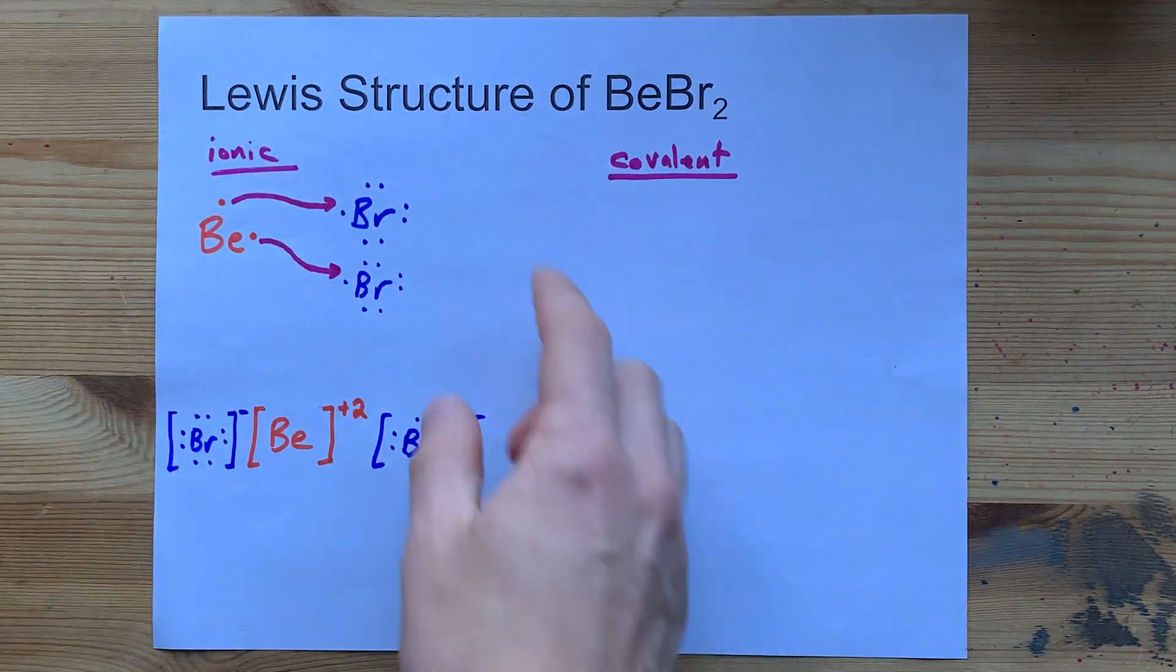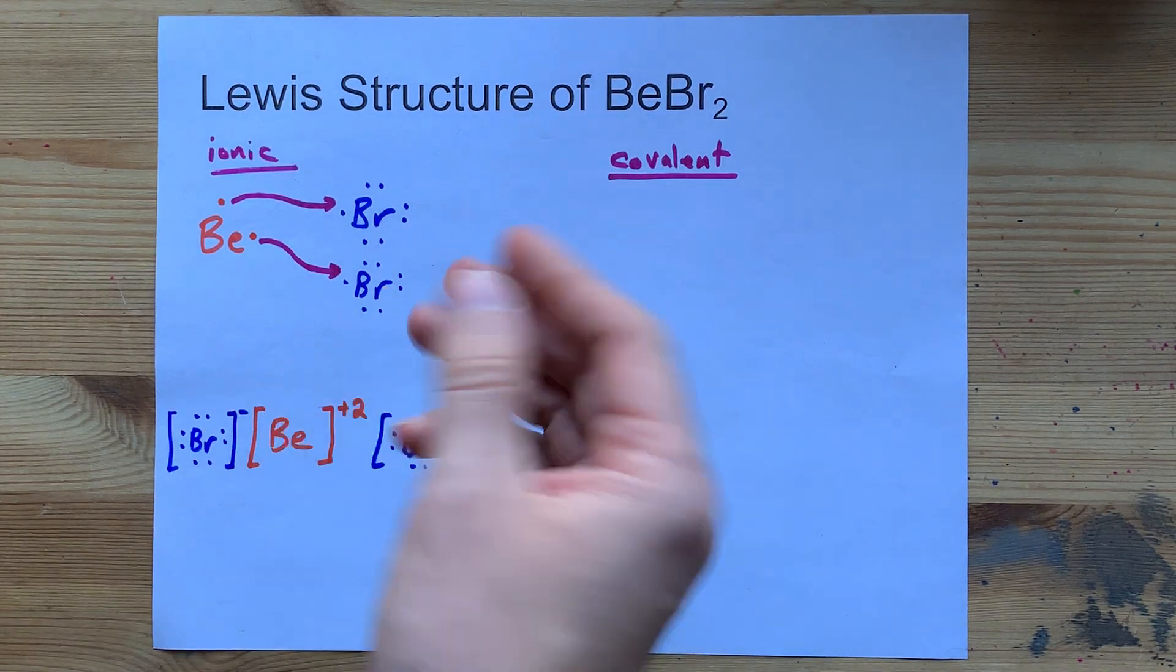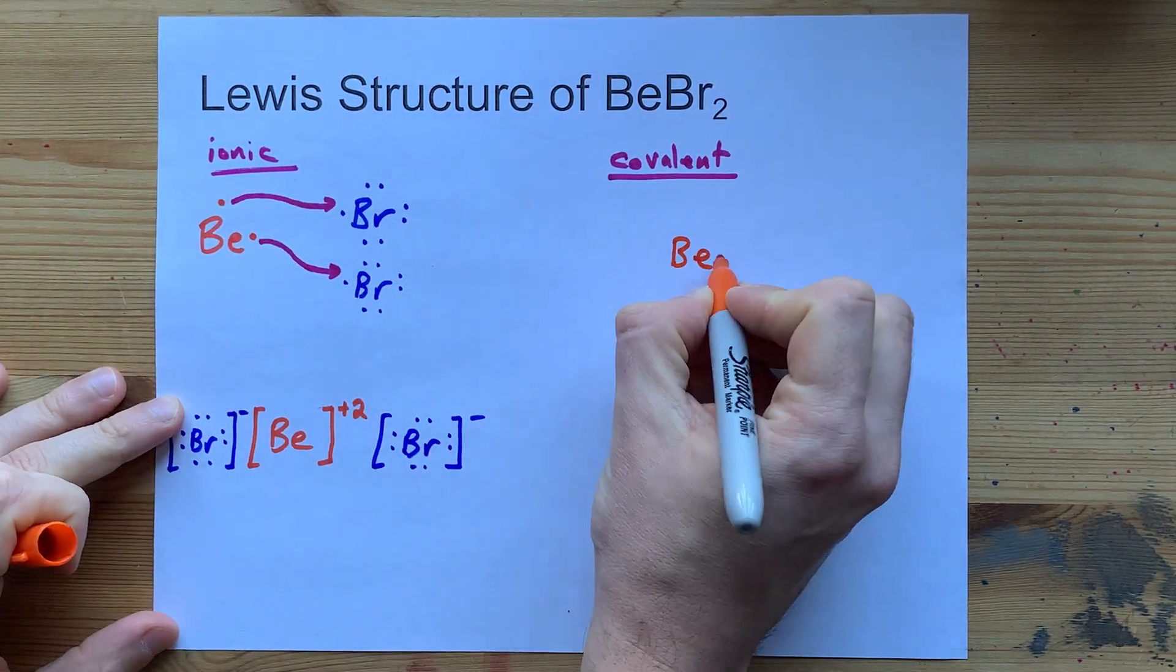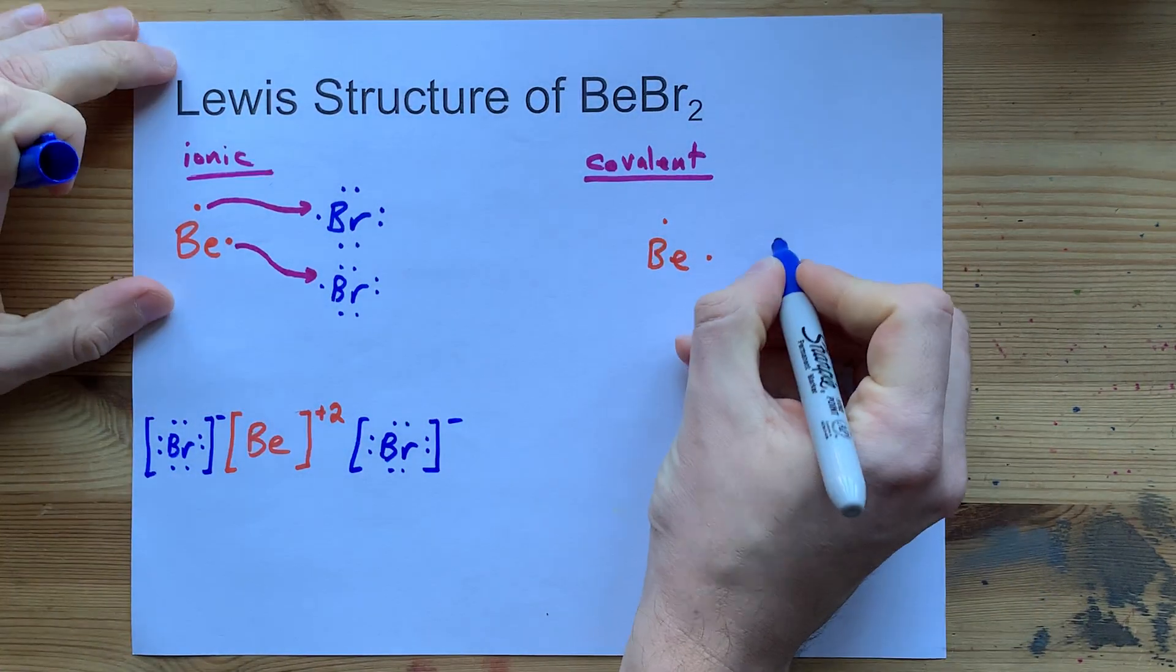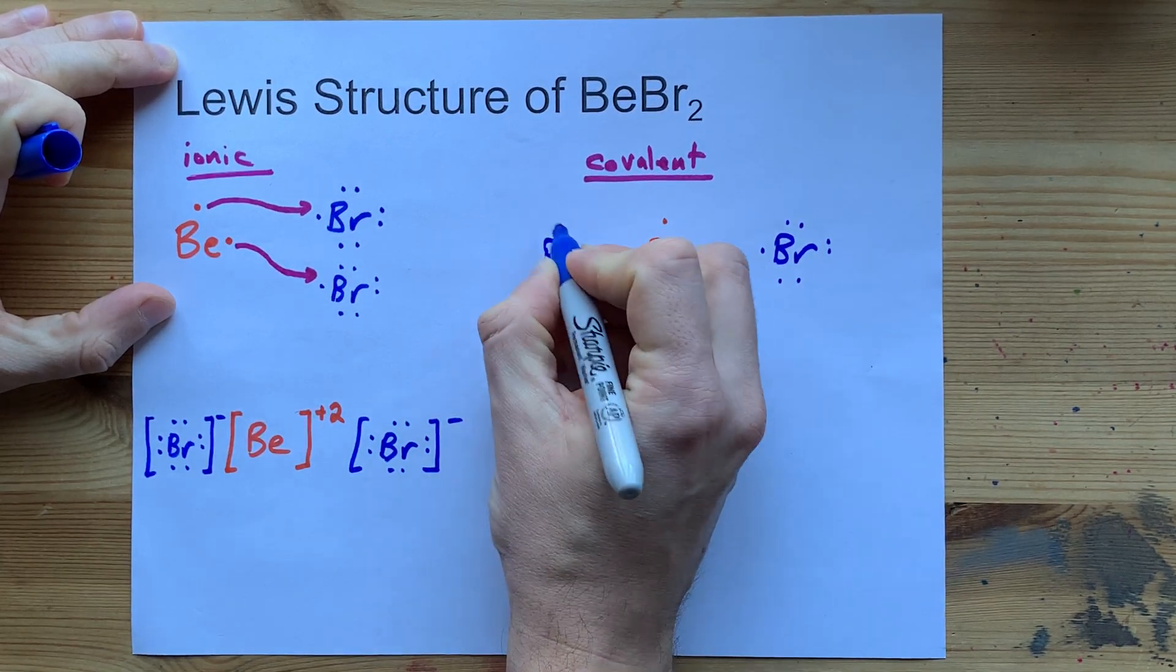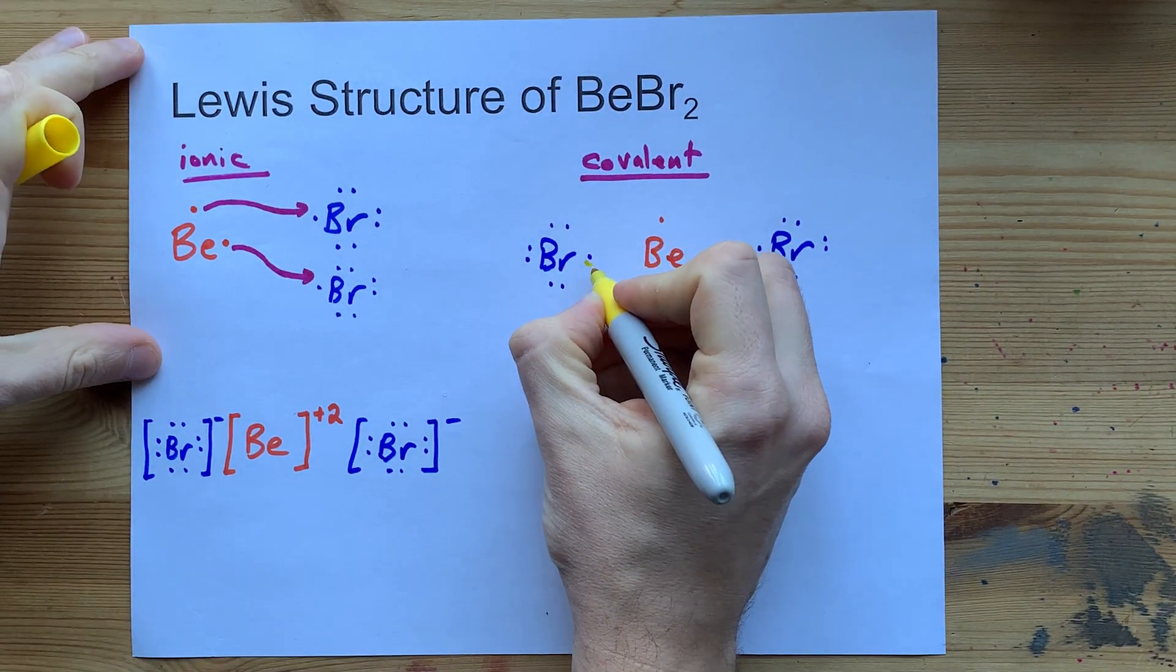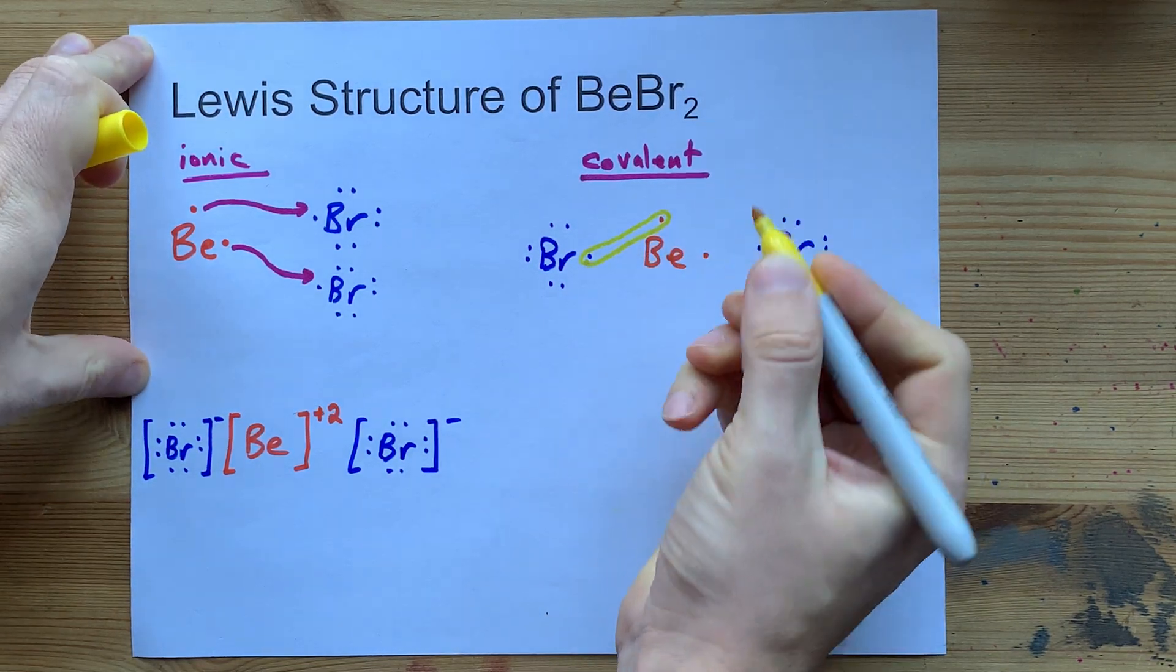But, turns out, beryllium bromide has covalent bonds, despite the electronegativity difference between the two. So, what happens is much more like beryllium having its two valence electrons, like we said, and bromine existing with its seven valence electrons. Now, I'm going to draw both atoms right off the bat.